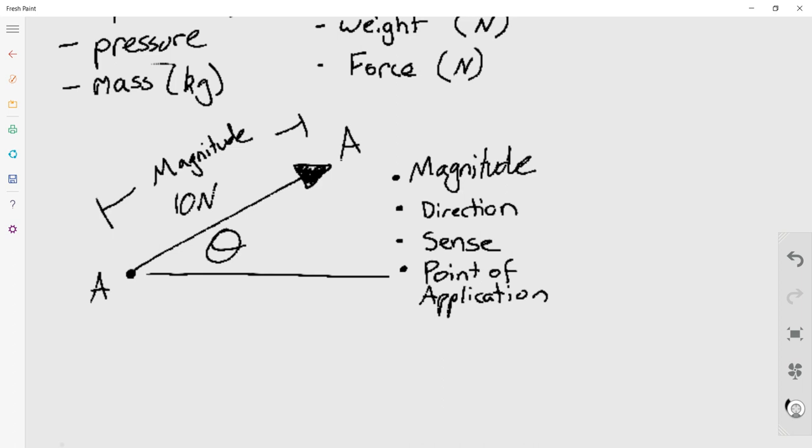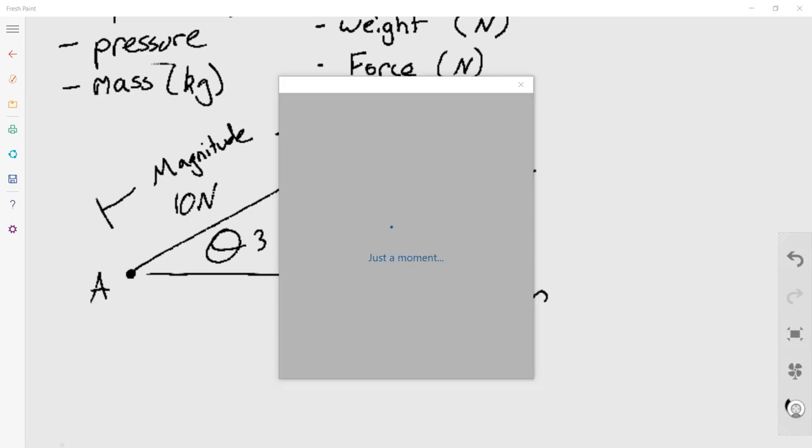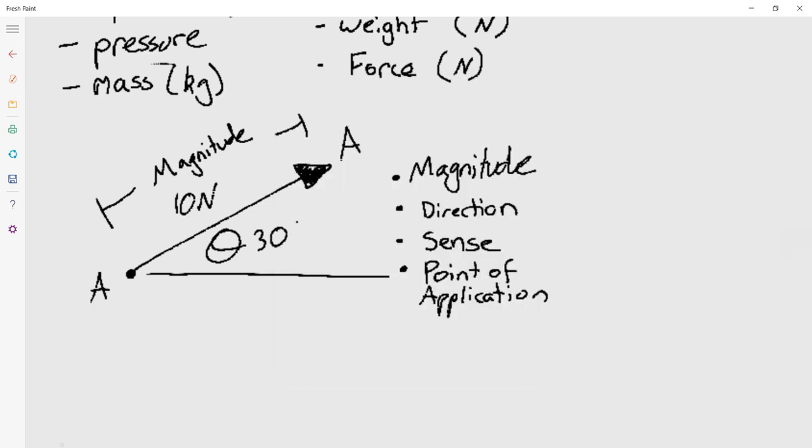Because we don't always draw forces to scale, we often have to actually label them with numbers for the magnitude. And often we write in the direction. So let's say that's 30 degrees, if we weren't drawing it with a ruler and a compass.